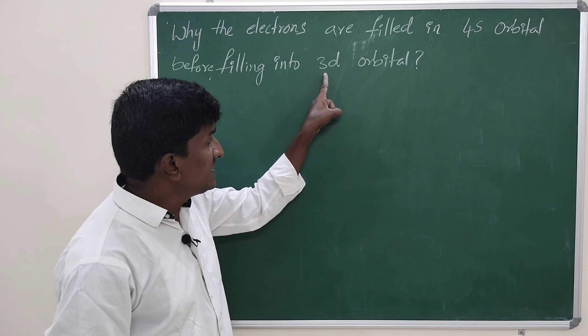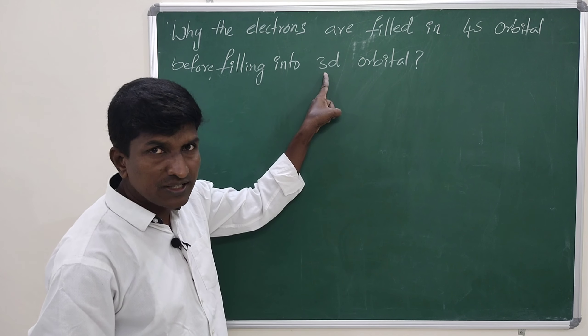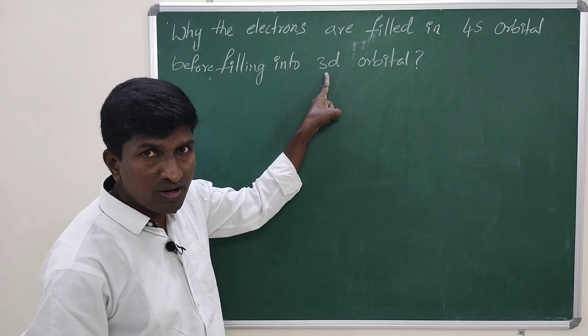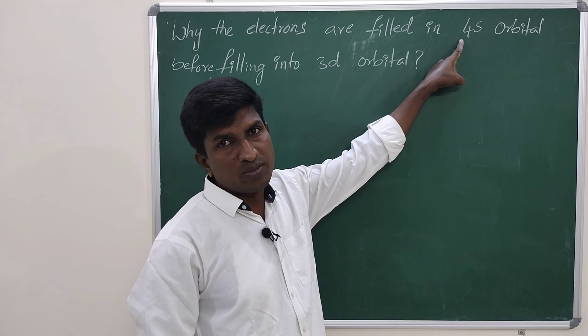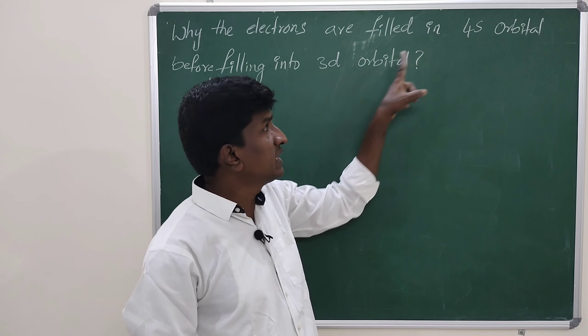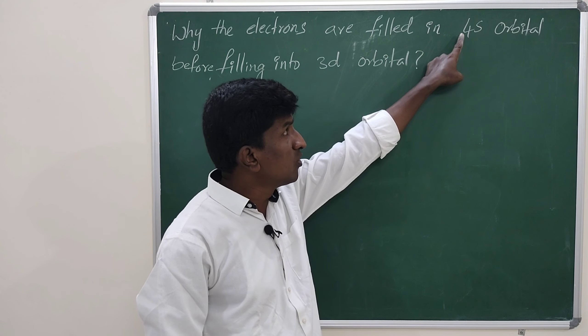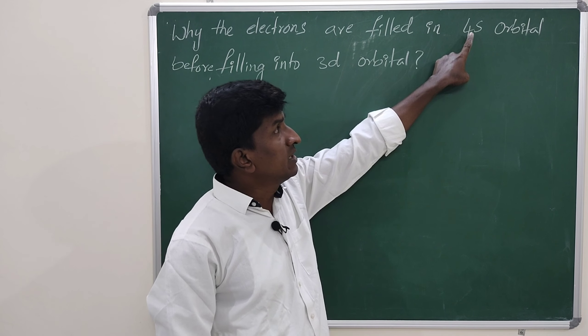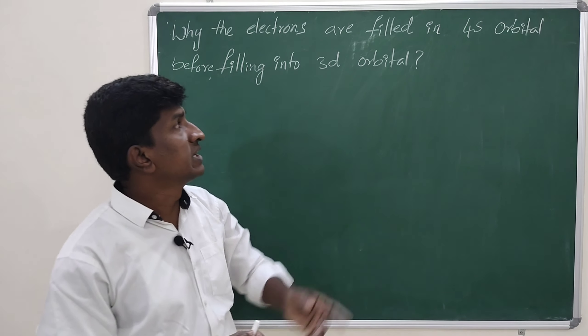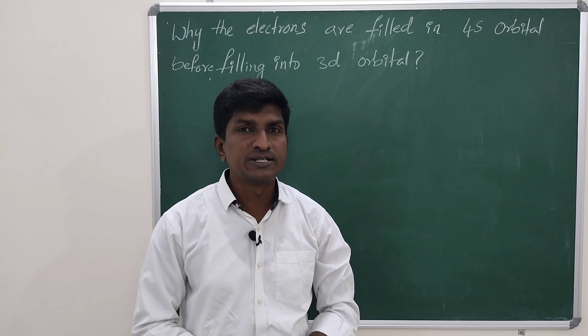Here the 3d is in 3rd orbit and 4s orbital is in 4th orbit. Then why are the electrons first filling into 4th orbit's s orbital, and after that filling into 3d orbital? What is the reason behind it?